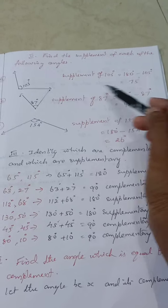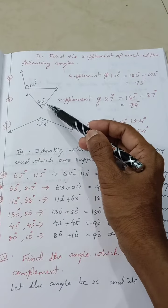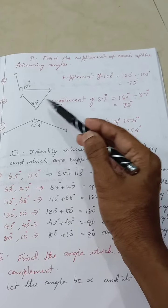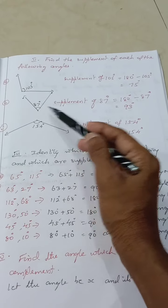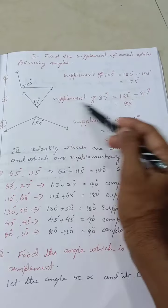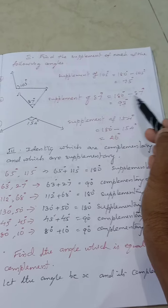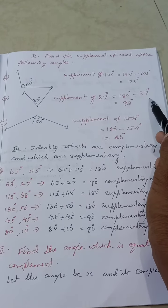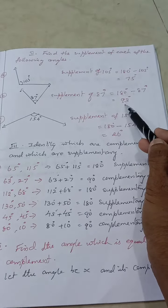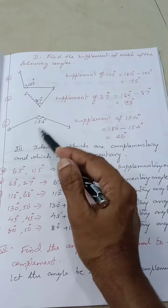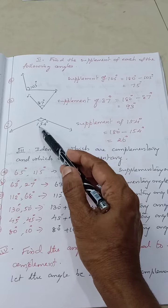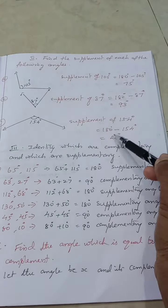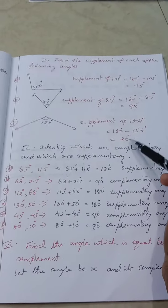The supplement of 87 degrees is 180 minus 87, which equals 93 degrees. The supplement of 154 degrees is 180 minus 154, which equals 26 degrees.